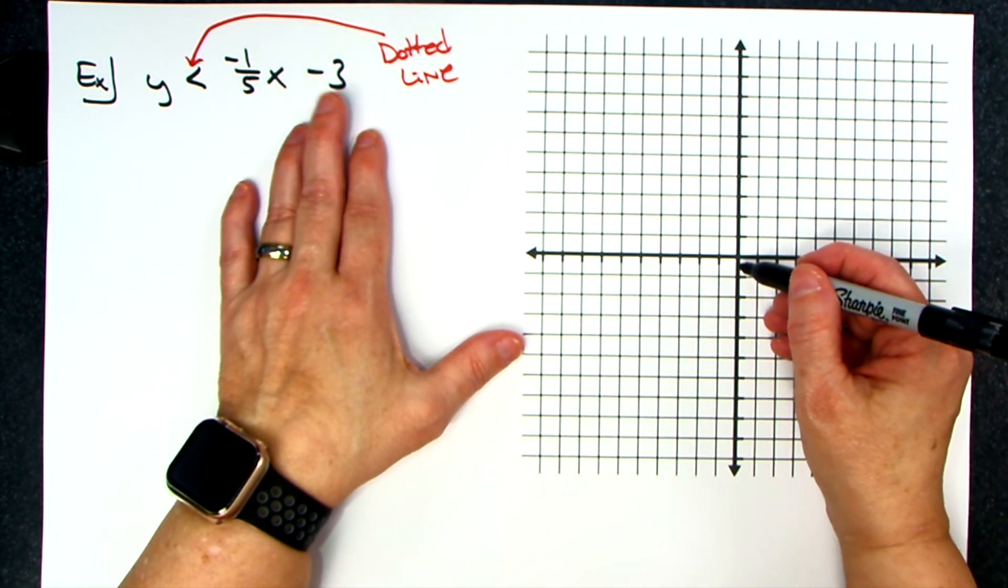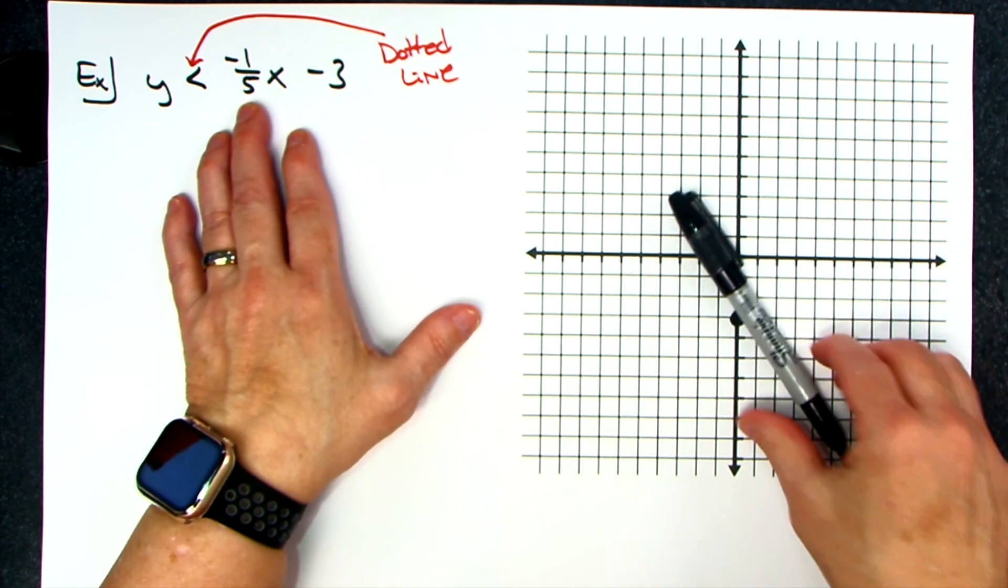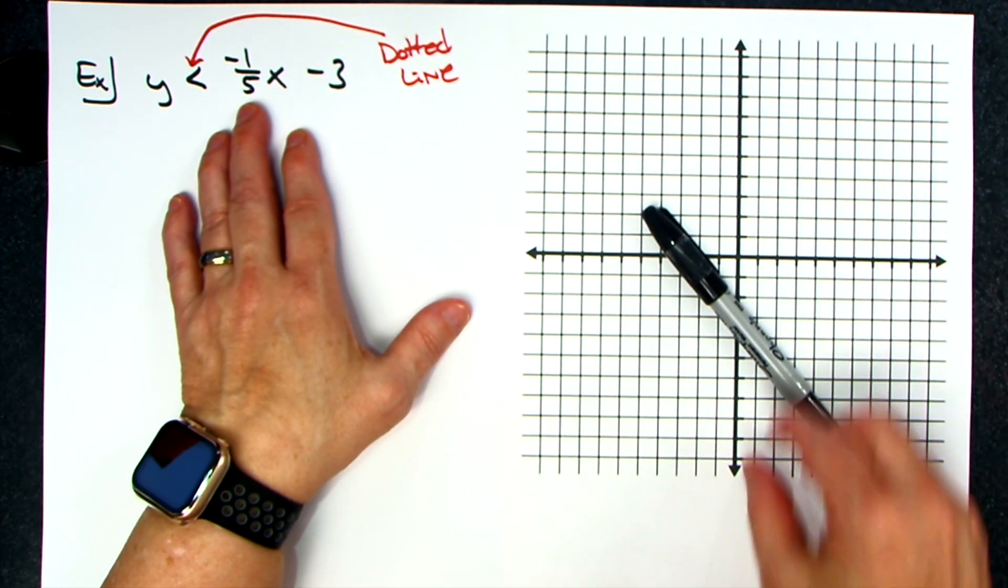So I can come down here to my y-intercept of negative 3 and put my first dot. A negative slope is going to make the line look like this, so I'm going to go up one and to the left five.